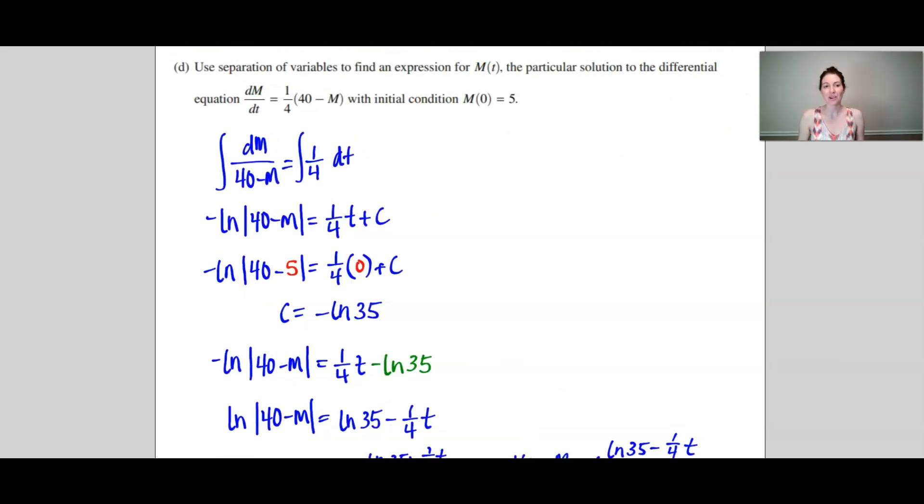And now for the last part, Part D. Here we had to use separation of variables. So the first thing you want to do is divide over the (40 minus M) and multiply over the dt so you can separate those variables. Now we integrate.